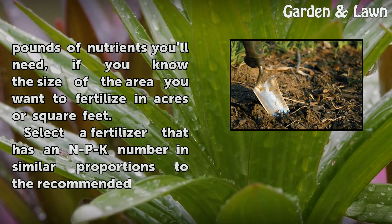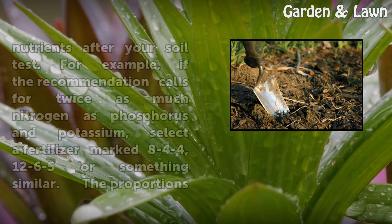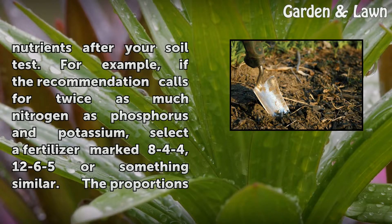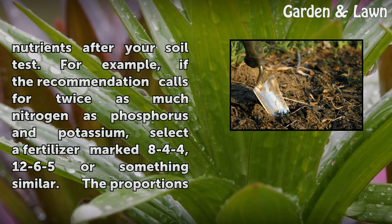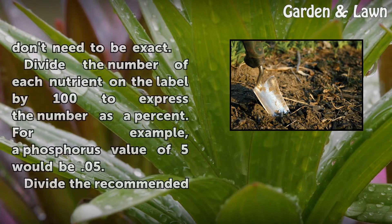Select a fertilizer that has an NPK number in similar proportions to the recommended nutrients after your soil test. For example, if a recommendation calls for twice as much nitrogen as phosphorus and potassium, select a fertilizer marked 8-4-4, 12-6-5, or something similar. The proportions don't need to be exact.